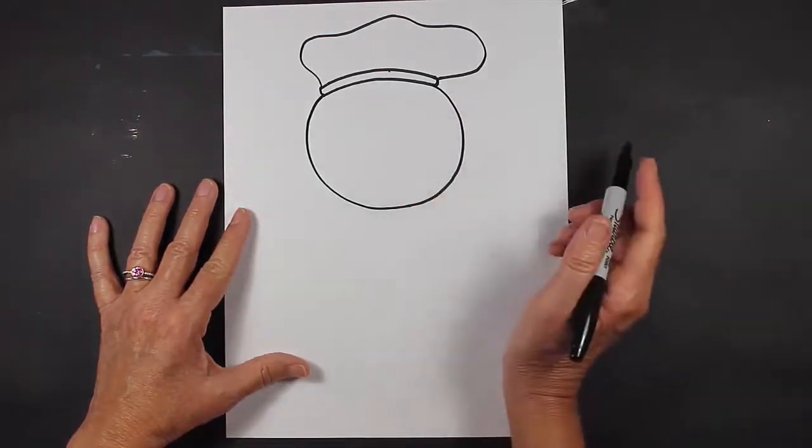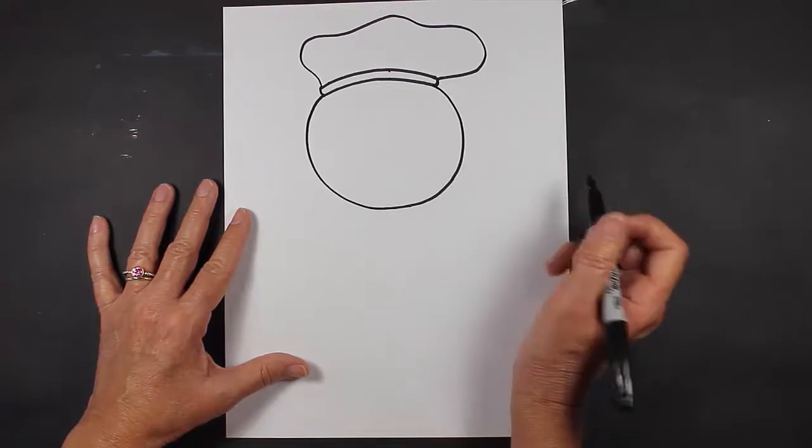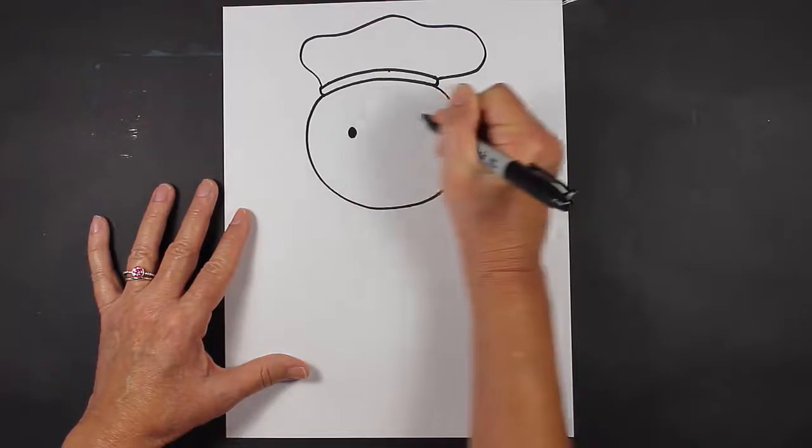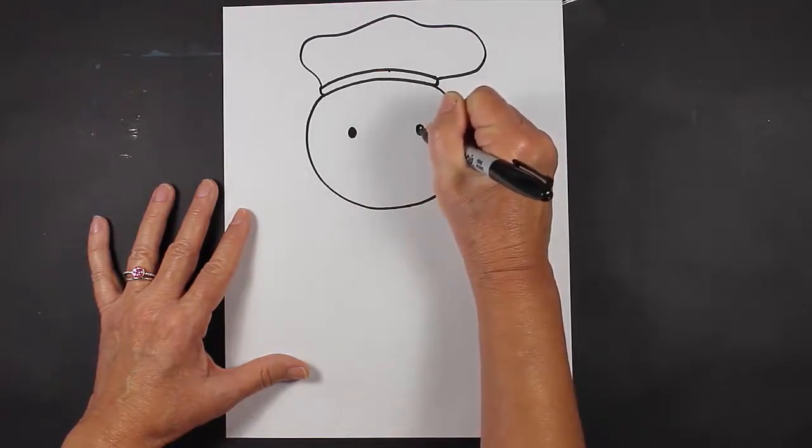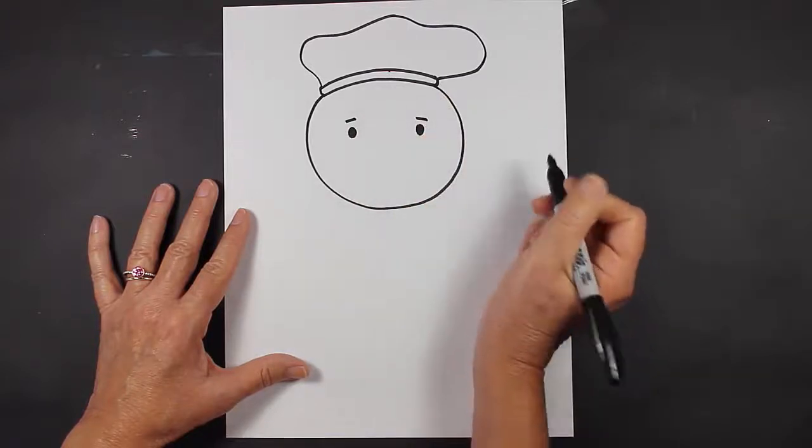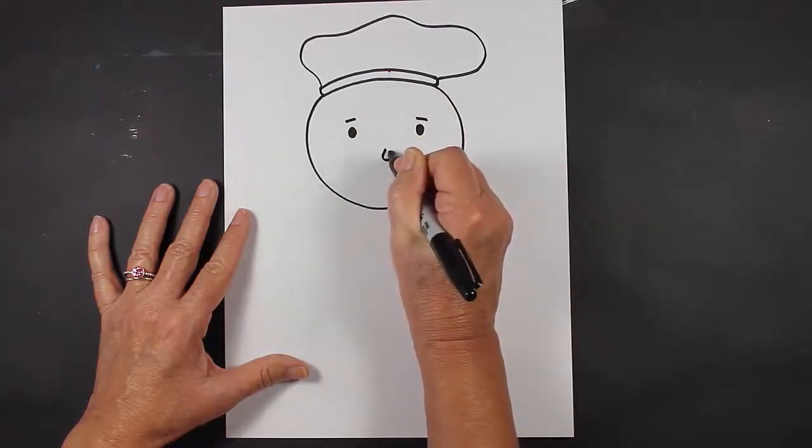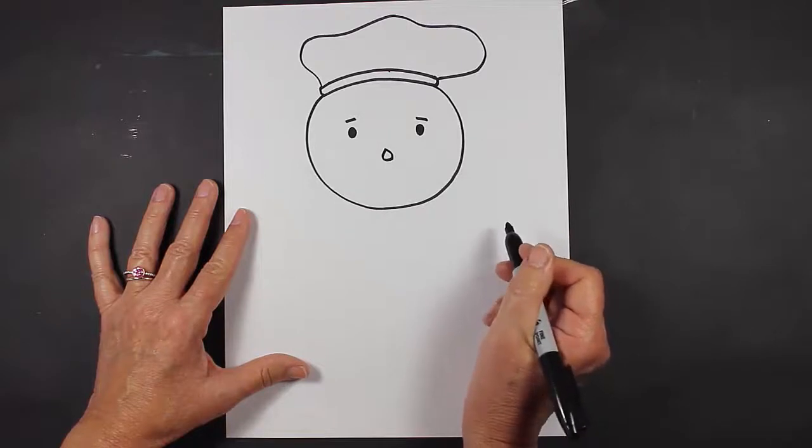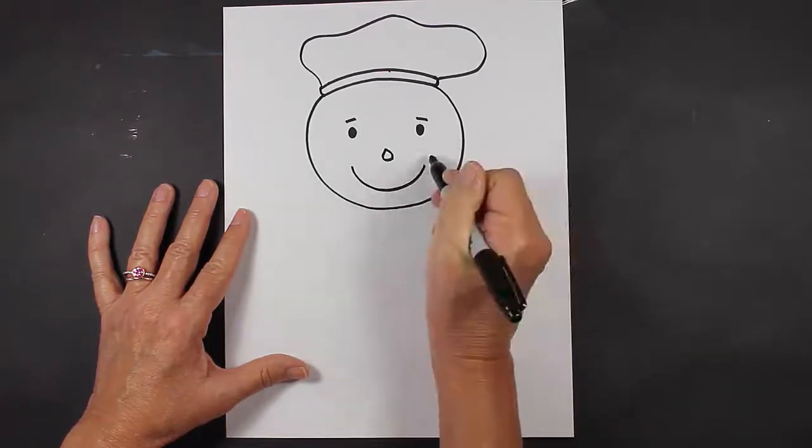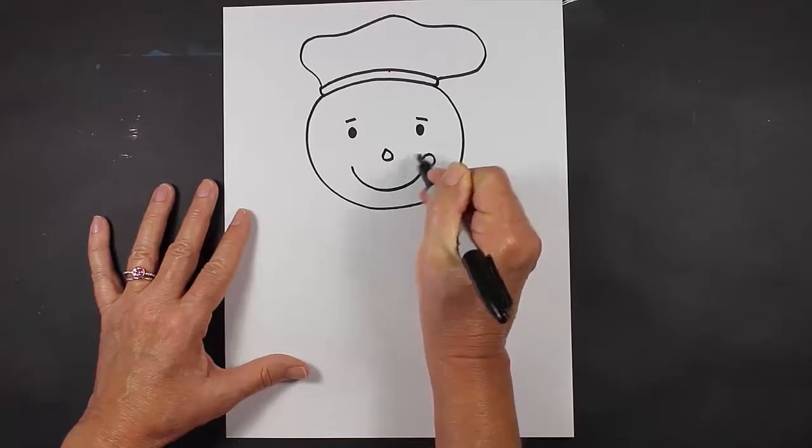Now we're going to make some eyes for our scarecrow. If you'd like to make some eyebrows, you can go ahead and do that. Then we'll make a nose, a little triangle, and then let's make a mouth, a smiling mouth with two circles at the end.